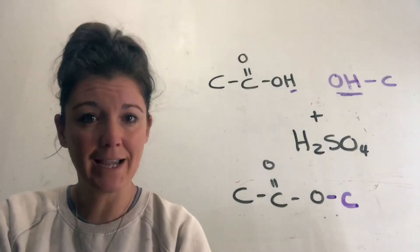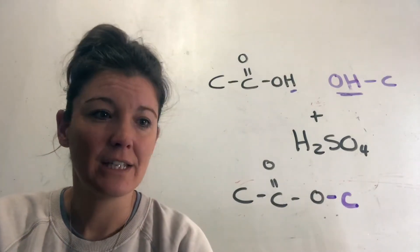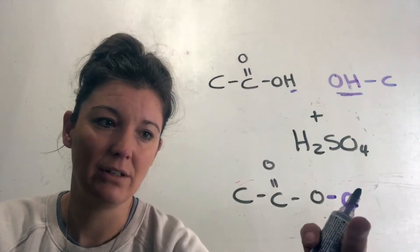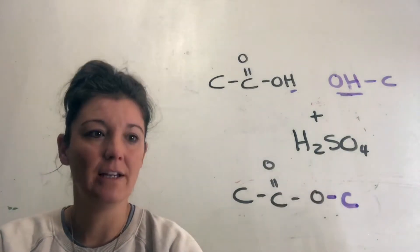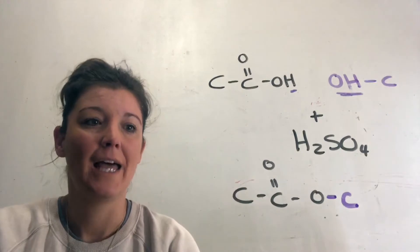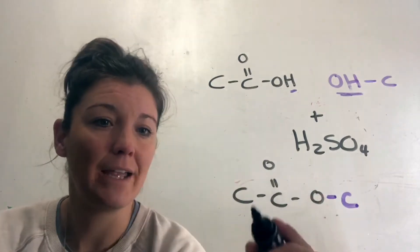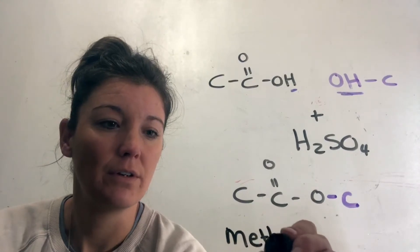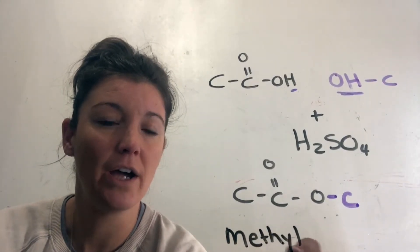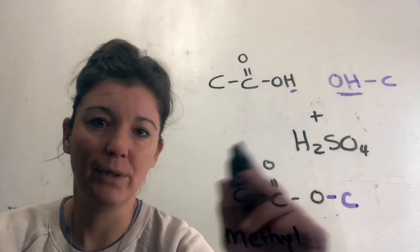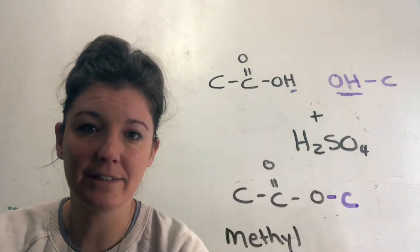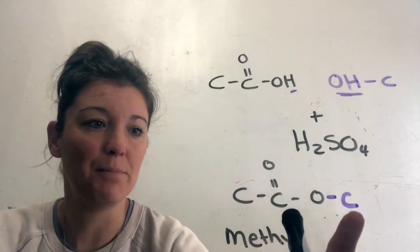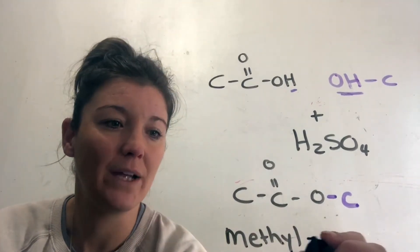So how do we name an ester? If we look at this, we name the alcohol side first. So the alcohol side, because it's only one, it's a meth. So we're going to say methyl, so it ends in yl, and then we're going to name the acid. So the acid has two carbons, so it's going to be eth, so it's going to be methyl ethanoate.